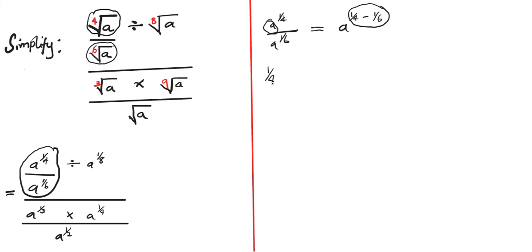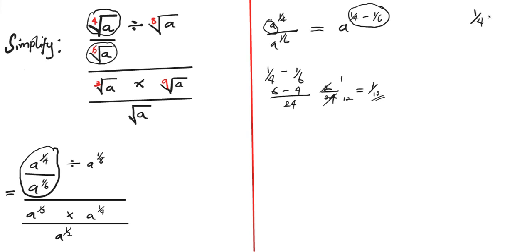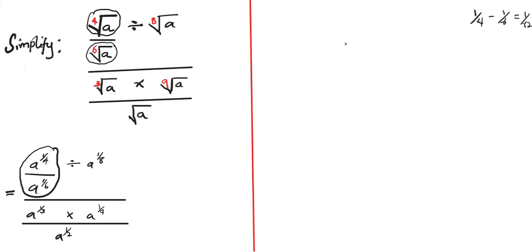Let's carry out this subtraction of fractions: one over four minus one over six. The LCM of four and six is 24. One times six is six, minus one times four is four, giving six minus four equals two over 24. Simplifying, two over 24 reduces to one over 12. So one over four minus one over six equals one over 12.